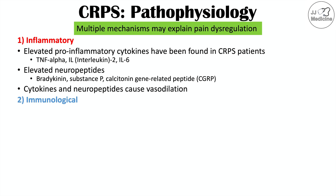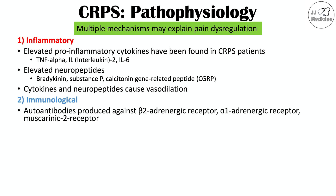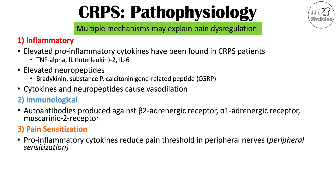The second proposed mechanism is immunological changes. It's believed that autoantibodies may be produced against certain receptors, including the beta-2 adrenergic receptor, alpha-1 adrenergic receptor, and muscarinic 2 receptor — which are part of the sympathetic and parasympathetic systems. Another mechanism is pain sensitization, which is a very important one. Those pro-inflammatory cytokines can reduce the pain threshold in peripheral nerves, which is peripheral sensitization.